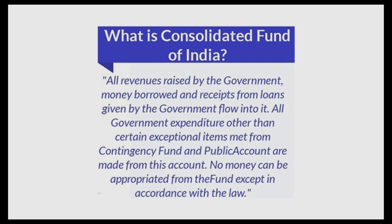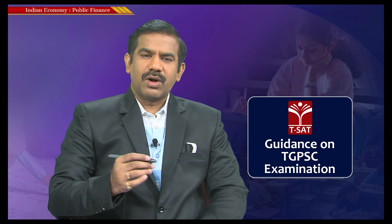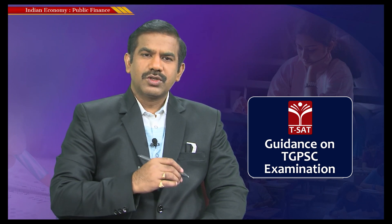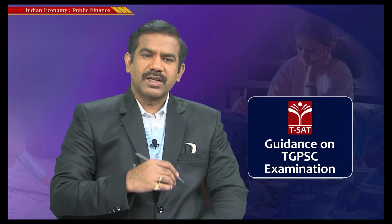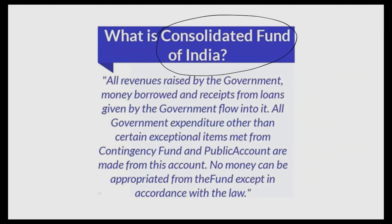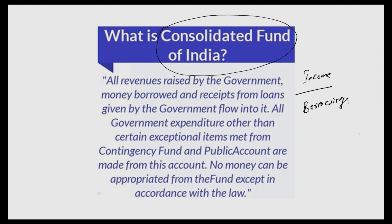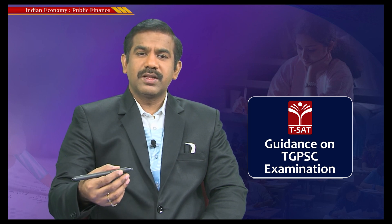In modern days, the Government of India maintains whatever revenues it receives from the public as part of the Consolidated Fund of India. All revenues raised by the government, money borrowed and received from loans — anything in the form of income or borrowings of the Government of India — flows into the Consolidated Fund of India. Any penny the government spends from this fund requires the government to be answerable to the Parliament.